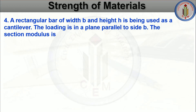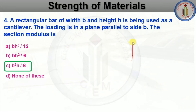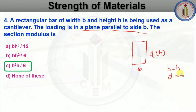A rectangular bar of width B and height H is used as a cantilever. The loading is in a plane parallel to side B. The section modulus options are BH³/12, BH²/6, B²H/6, or none of these. The answer is B²H/6. Since loading is parallel to side B, the dimensions interchange: B becomes H and D becomes B. So the moment of inertia I = HB³/12 and Y_max = B/2.